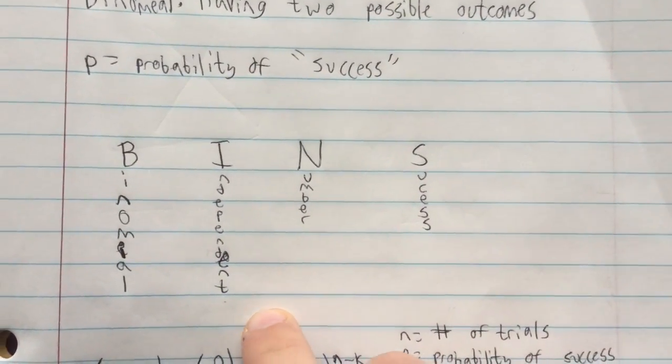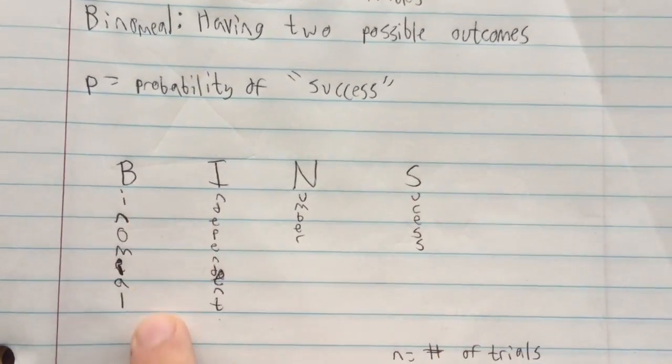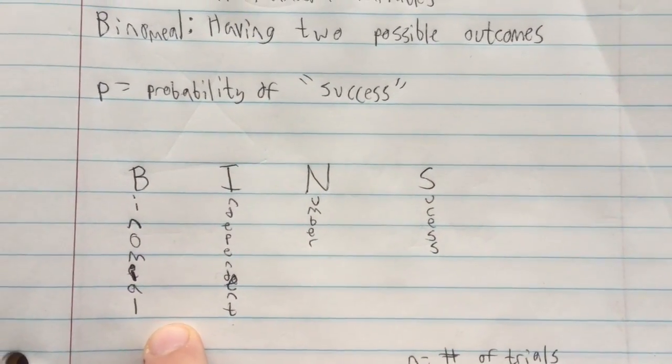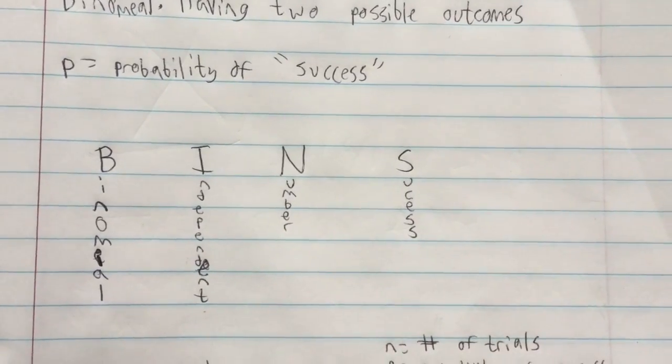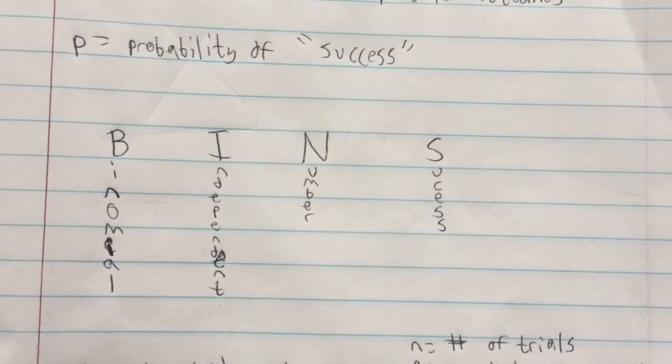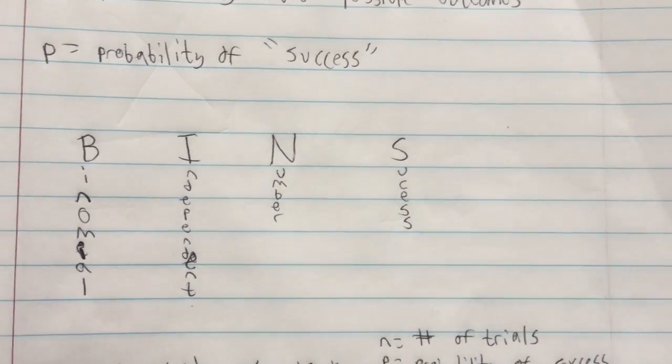The conditions can be represented by the acronym BINS. B is binomial, it has to have two possible outcomes. I is independent, trials can't affect each other. Knowing the result of the first trial shouldn't affect your knowledge of what will happen in the second trial.